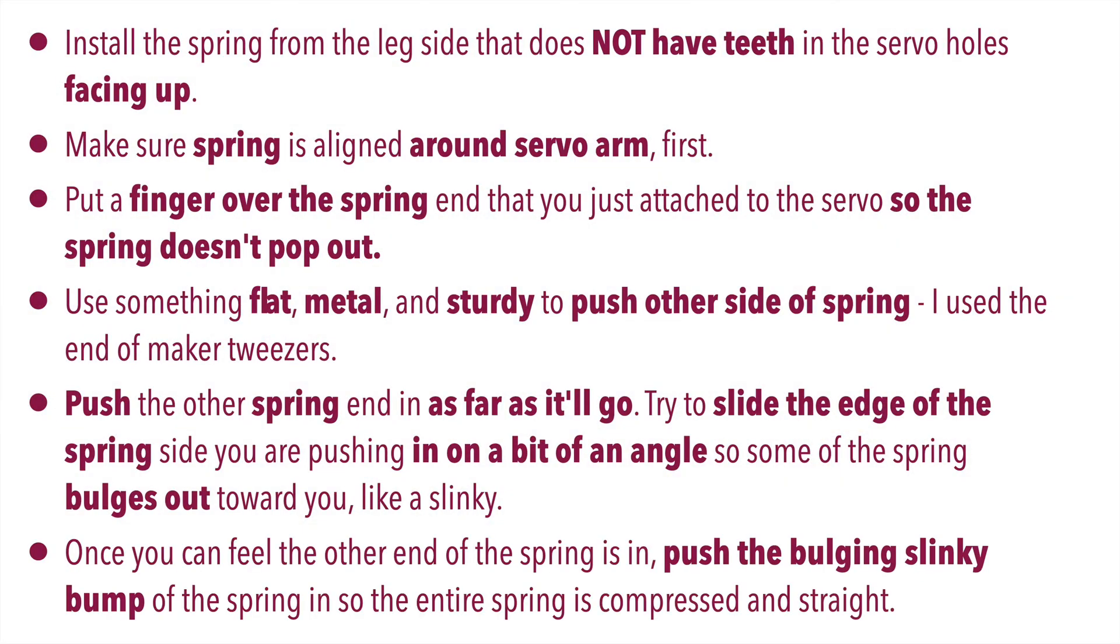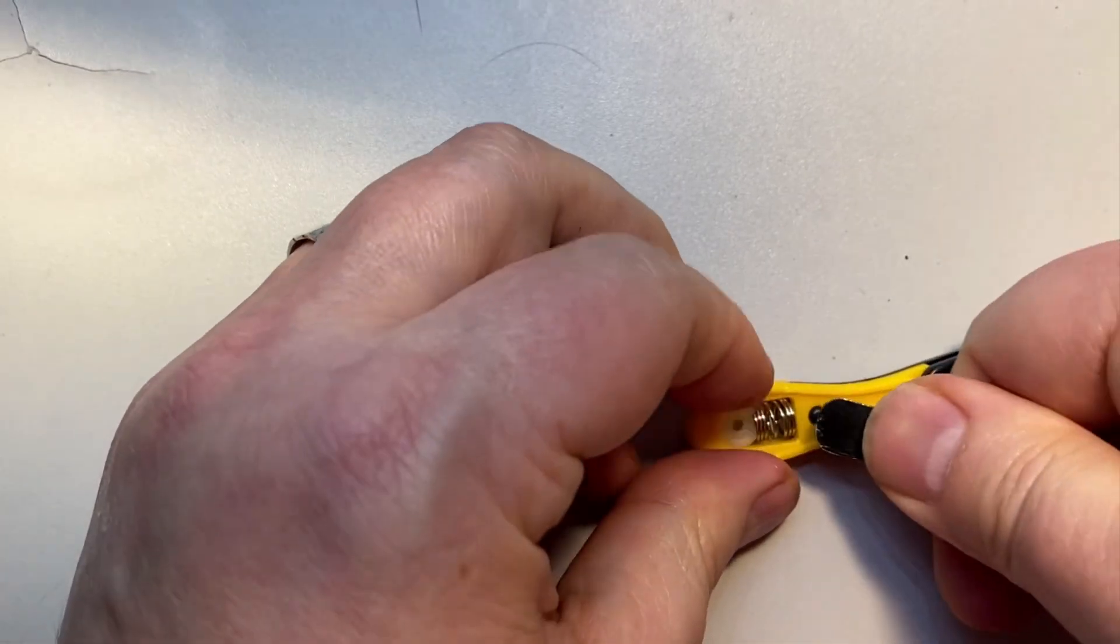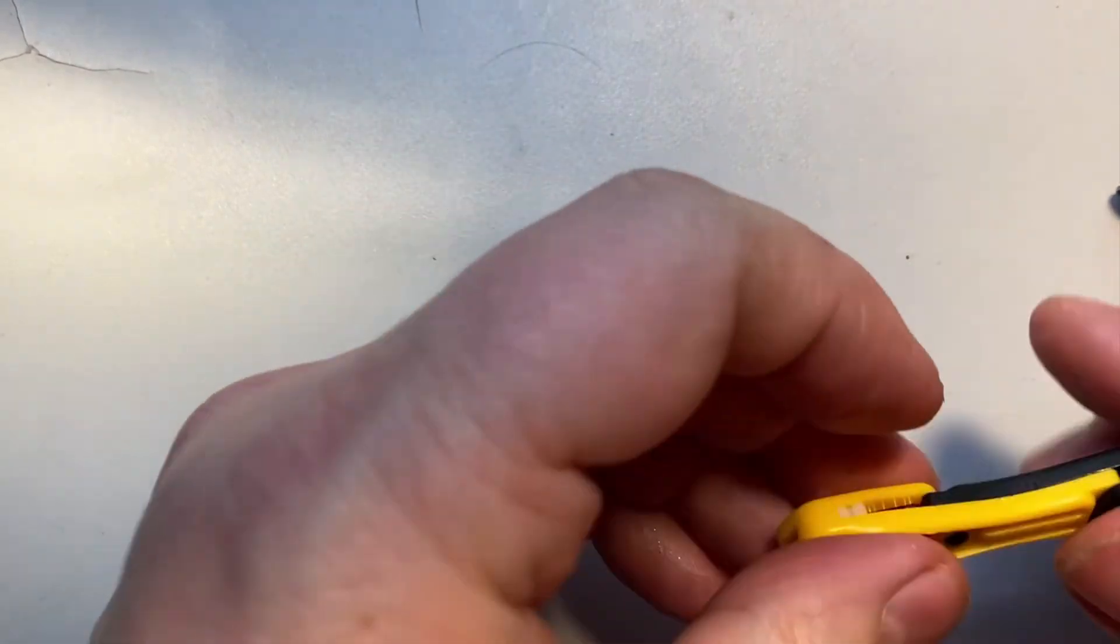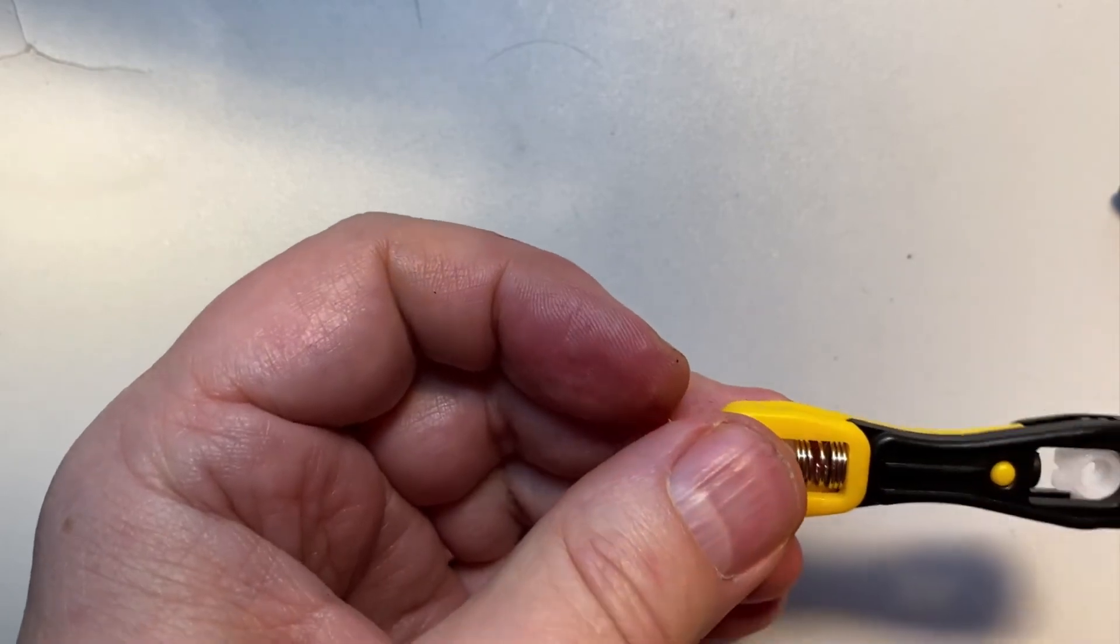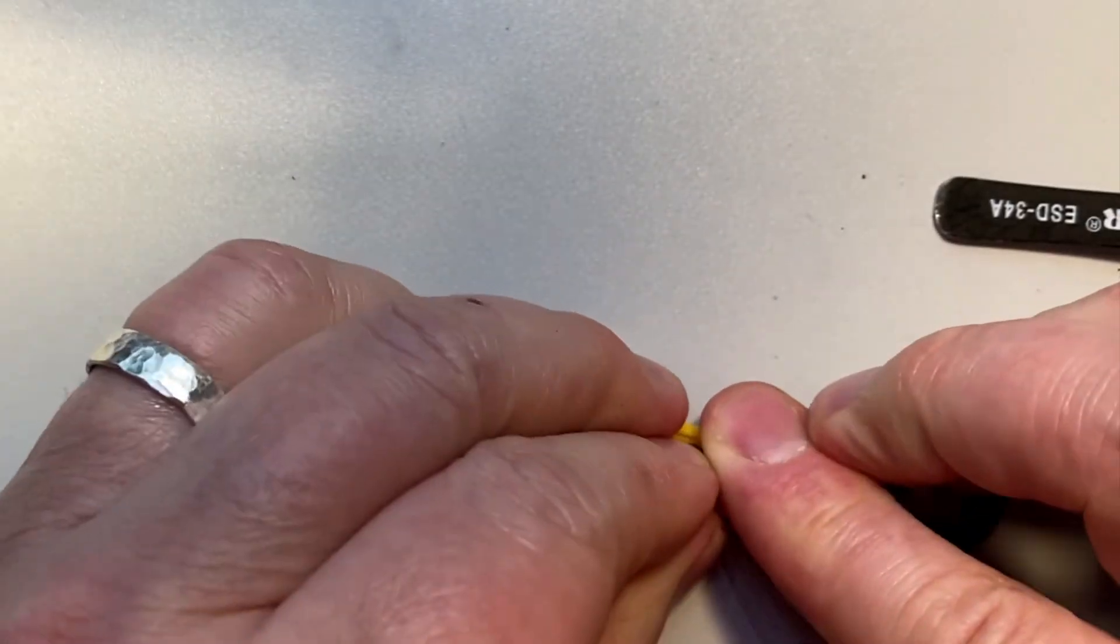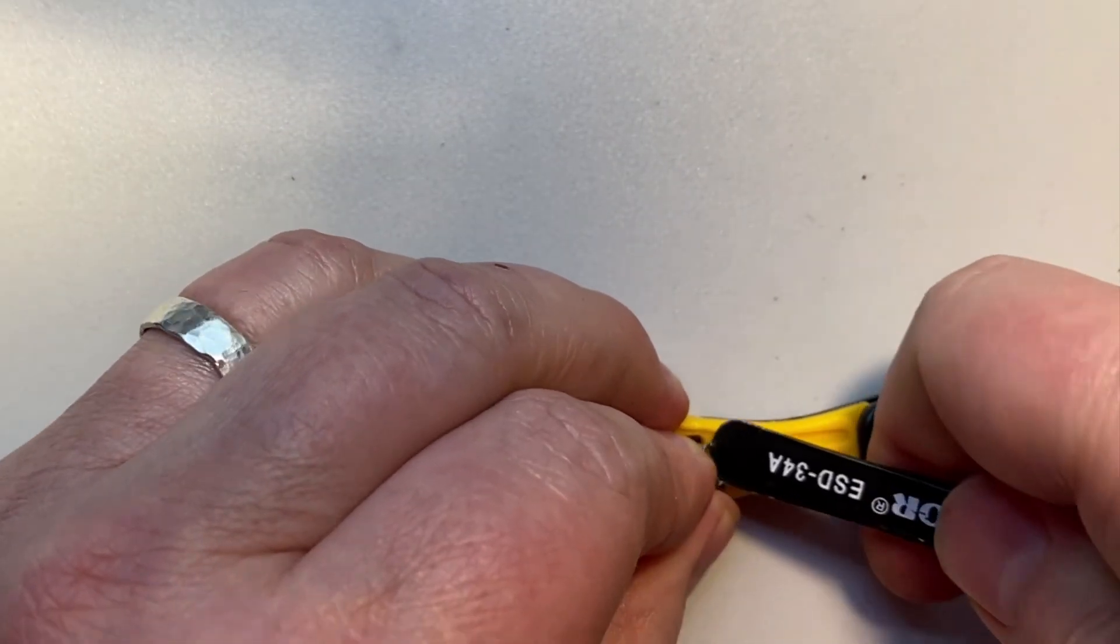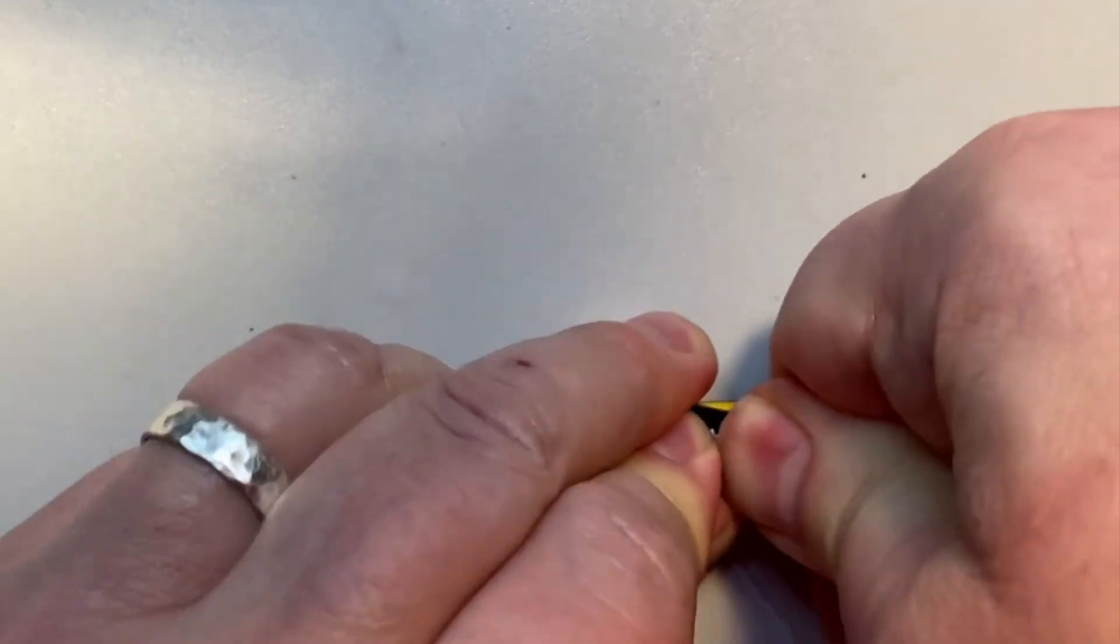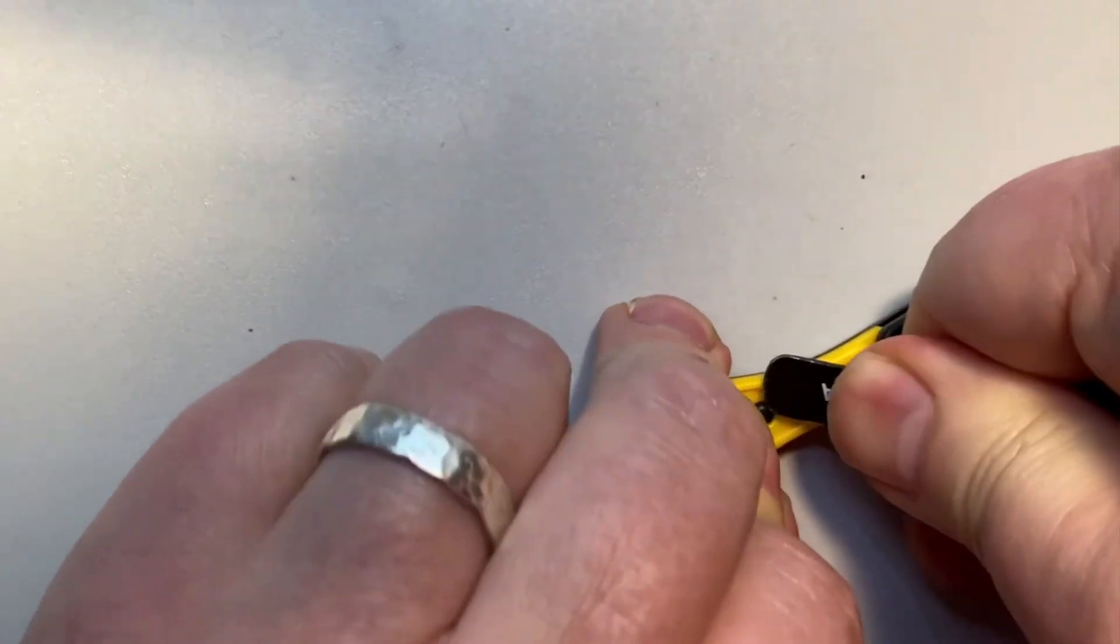And once you've got it in, you'll feel it, push the bulging slinky bump of the spring in so that the entire spring is compressed and straight. Your fingers are going to be a bit sore, and it isn't really a task for middle school or younger kids because you need to have good finger strength and dexterity, but the technique did work once I got it down and I was able to get the other seven in one by one by repeating these steps.